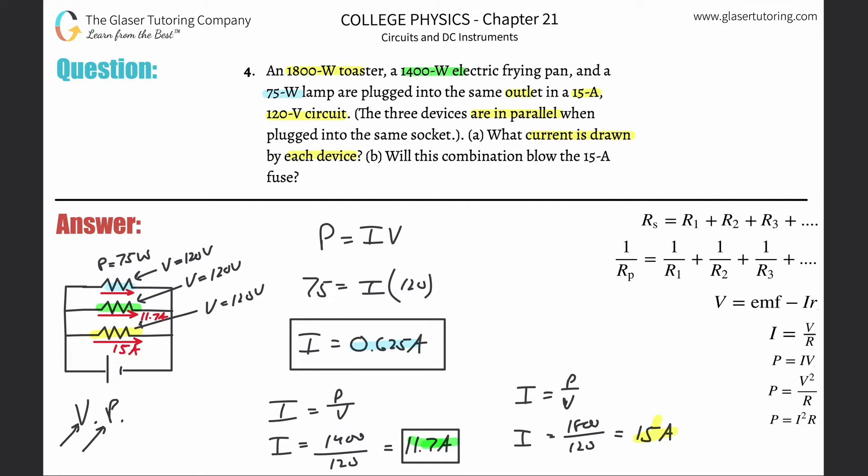Now, the only way you're going to get a current flow of 15 amps through the first one, 11.7 amps through the second, and 0.6 amps through the third is if you had a total current flowing around the circuit of 15 amps plus 11.7 plus 0.6. That's the total current, I sub T. The current through each resistor is not constant.